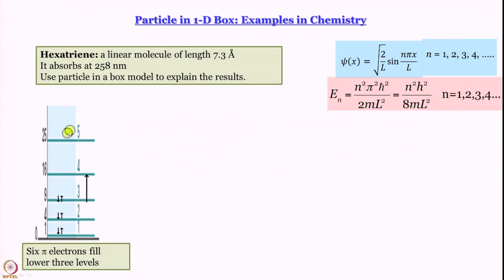What we are going to do is use the particle in a box model to explain this result. To do that, we will consider that each pi electron in hexatriene acts as a particle in a box. But is that assumption valid? Should we even make that assumption?